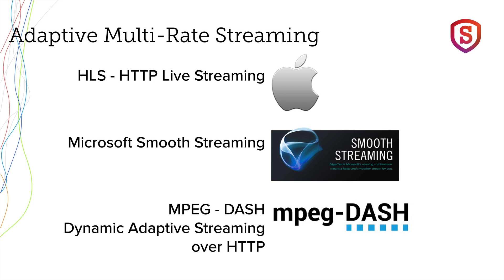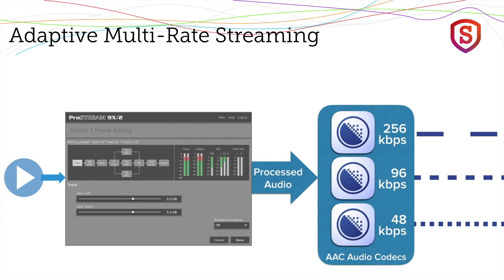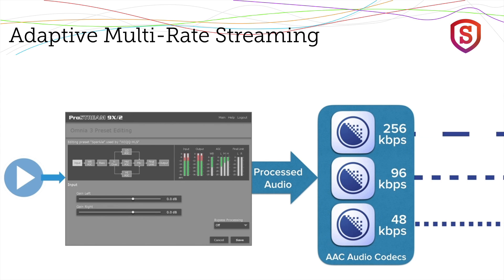Here are the three standards again: HLS is HTTP Live Streaming from Apple, Microsoft Smooth Streaming, and MPEG-Dash. It's thought that MPEG-Dash will become more popular as time goes on, but for now HLS is the most popular and is supported by every iOS device.